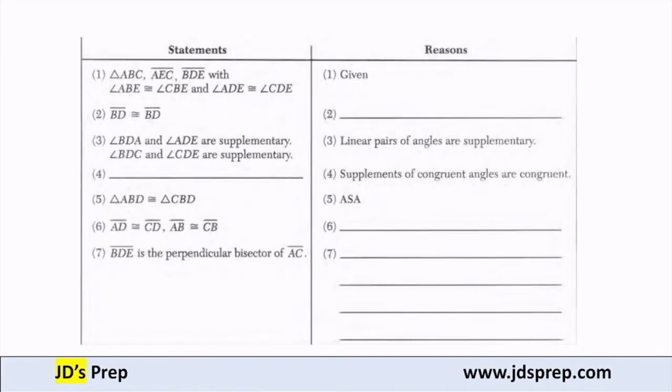Here's our table. That first piece of information — that's all the stuff that was given to us. The two angles: ABE is congruent to CBE, and ADE is congruent to CDE.